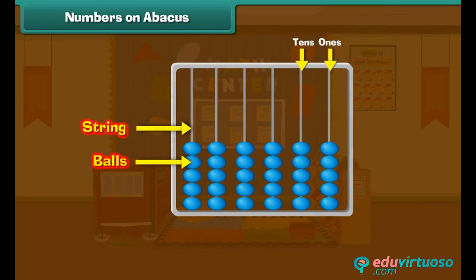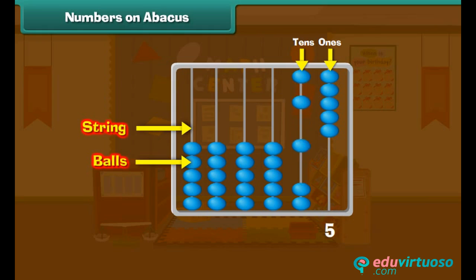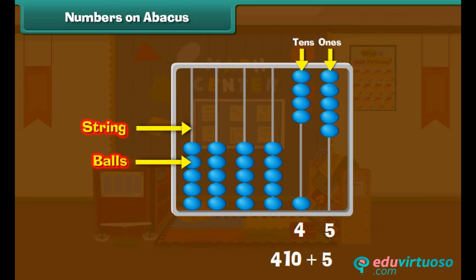Look at this abacus. It has five balls in the ones place and four balls in the tens place. Therefore, the number is 45.